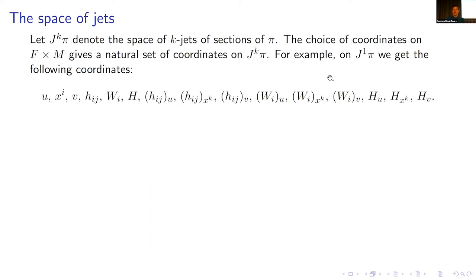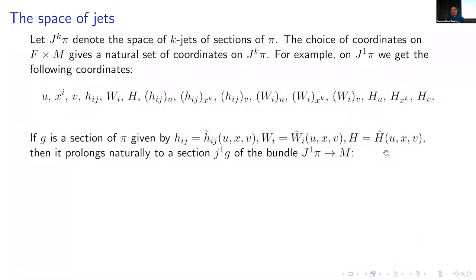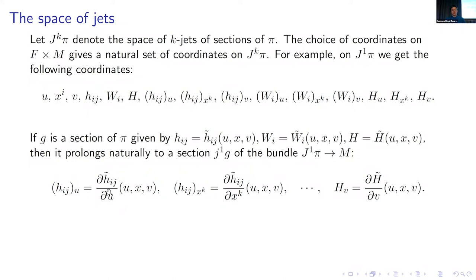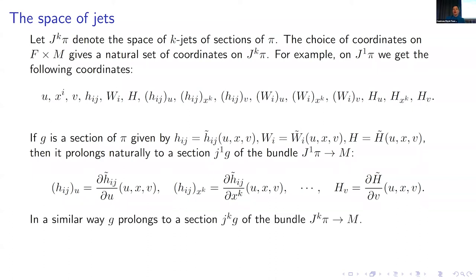The choice of coordinates on the total space F × M gives a natural set of coordinates on J^k π. For example, on J^1 π we get the same coordinates as before, but we also add coordinates corresponding to first derivatives of these functions. If g is a section of π given by these functions, it prolongs naturally to a section J^1 g of the bundle J^1 π, where h_{ij,u} is just the partial derivative of h_{ij} with respect to u, and so on. Any section gives rise to a section on J^k π in the same way.